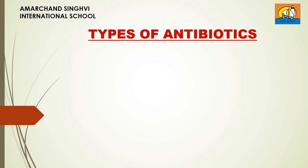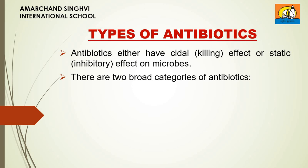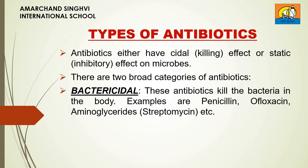Let's now talk about types of antibiotics. Antibiotics either have a cidal (killing) effect or a static (inhibitory) effect on microbes. There are two broad categories. Bactericidal antibiotics kill the bacteria in the body. Examples are penicillin, ofloxacin, aminoglycosides such as streptomycin, etc.